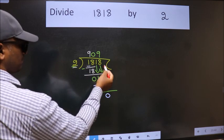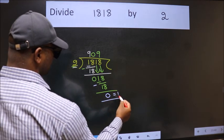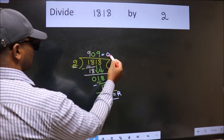No more numbers to bring it down. So we stop here. This is our remainder and this is our quotient.